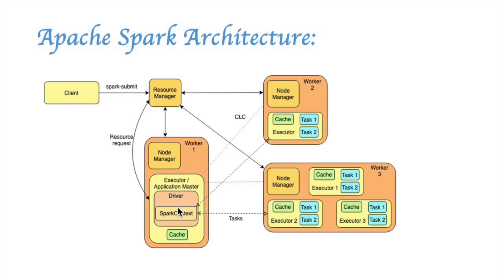The driver program is responsible for executing the Spark application. Once the resource manager identifies the resources, it sends the lease to the application master. The application master gains access to these resources by sending a lease to the individual node manager. The application master then asks the node manager to create executor containers in each worker node.